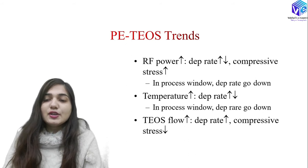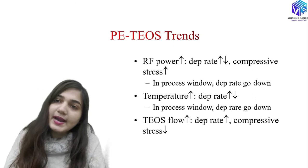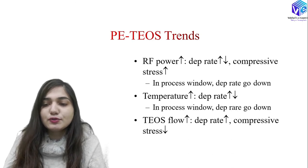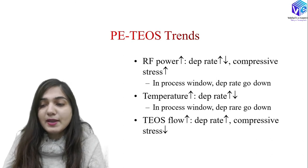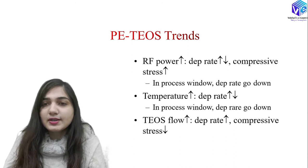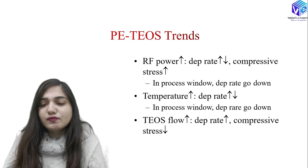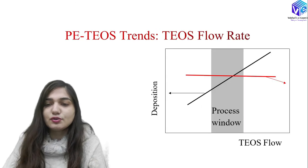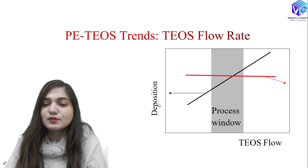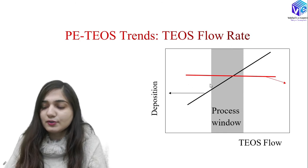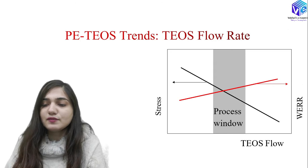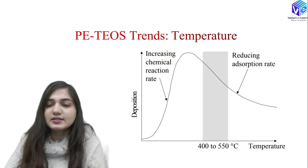Now coming to the PE-TEOS process trends. If I increase the RF power, the deposition rate might increase or decrease depending on the particular RF power level — compressive stress is going to increase, and within the process window the deposition rate goes down. At higher temperature, the deposition rate within the process window is also decreasing. If I increase the TEOS flow rate, the deposition rate increases and compressive stress decreases. Refraction index is constant with TEOS flow increase, while WERR is increasing.